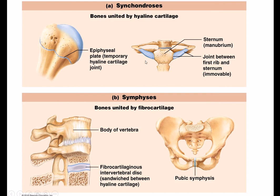Symphyses have fibrocartilage between the different bone ends. The pubic symphysis between the two pubic bones is a type of symphysis, and the intervertebral discs between the various vertebrae are also fibrocartilaginous symphysis joints. Both the pubic symphysis and intervertebral discs have pads of fibrocartilage between them, but they also still have articular cartilage covering each bone end — the symphyses simply have fibrocartilaginous pads sandwiched in between.